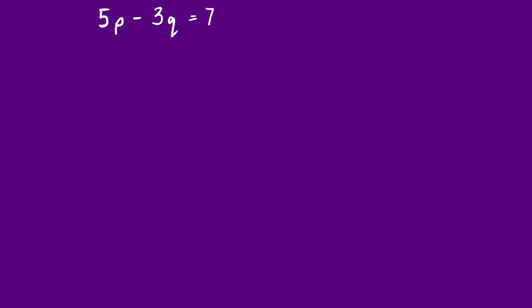In this example we have 5p − 3q = 7 and 9p − 3q = 15. We have the same coefficient for q — both are negative 3. That's absolutely fine; we do exactly the same thing. We subtract one equation from the other, which will remove that negative 3q. It doesn't matter which one you subtract from which.